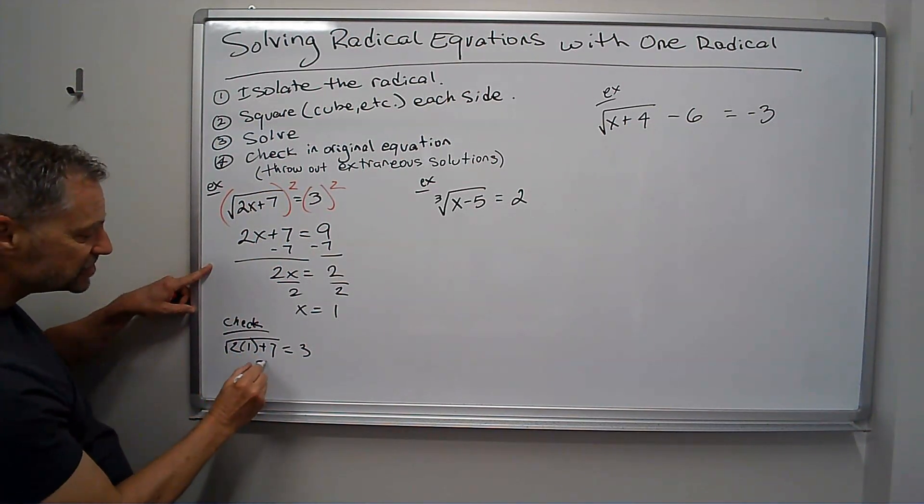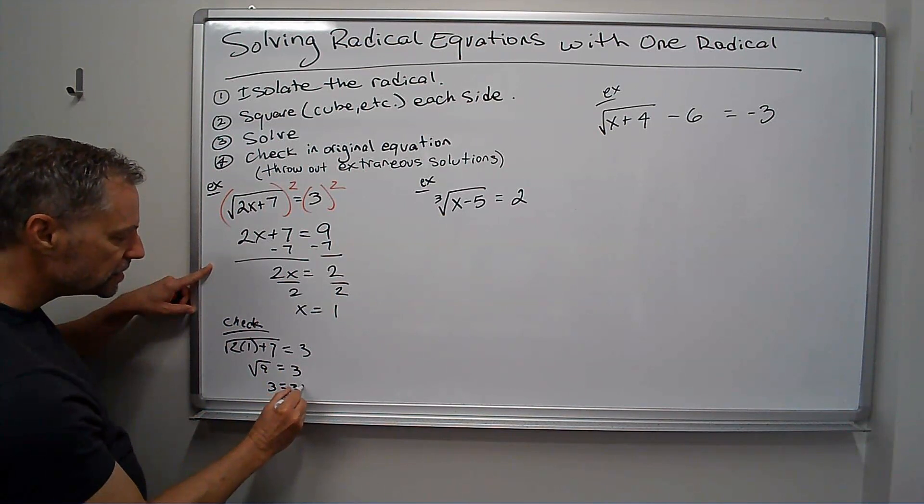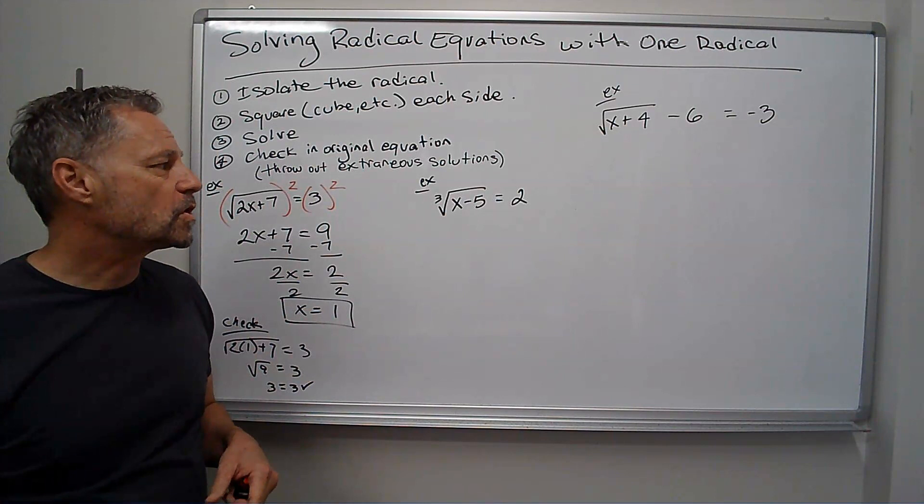That's 2 plus 7 is 9. That's the square root of 9 equals 3, which does check. So that means that is the right answer. And I'll go ahead and box that.